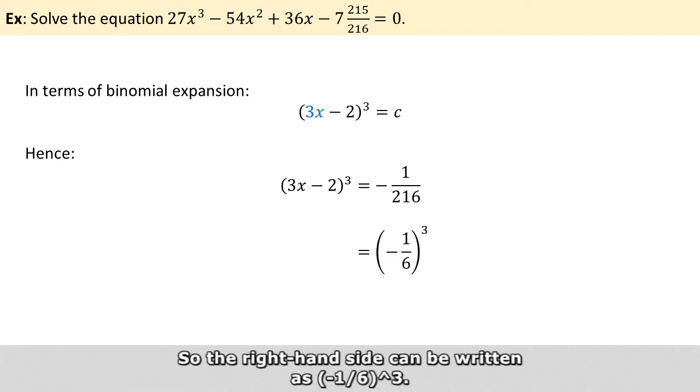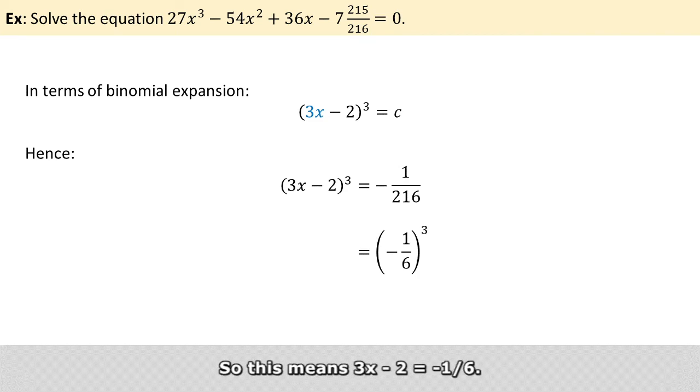So the right hand side can be written as minus 1 over 6 raised to the power of 3. So this means 3x minus 2 simply equals minus 1 over 6. Solving this gives us x equals 11 over 18.